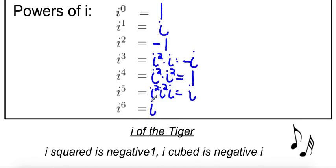i to the sixth, that's going to be i squared times i squared times i squared, which is negative 1 times negative 1 times negative 1, which is, of course, negative 1.